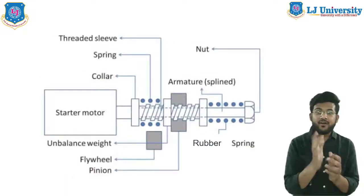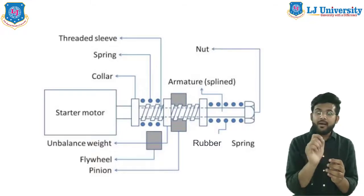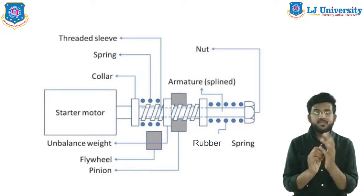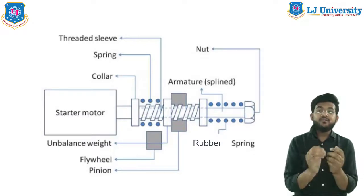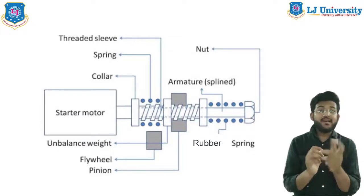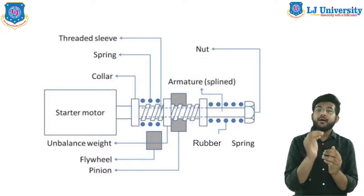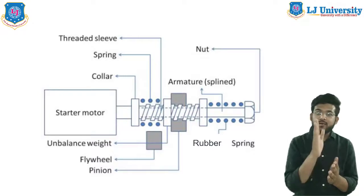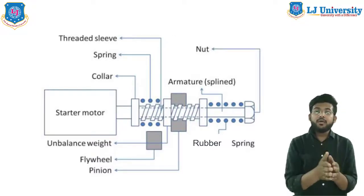The rubber spring Bendix drive is similar to the compression spring Bendix drive, with the only difference being that the compression spring is replaced by a rubber spring. This is done to avoid any damage caused by false engine starting — when the pinion gets disengaged and an attempt is made to bring it back into mesh. The only change is that a rubber spring is used instead of a metal spring.